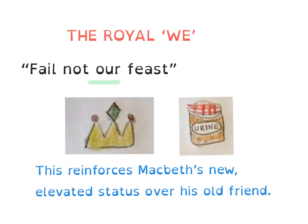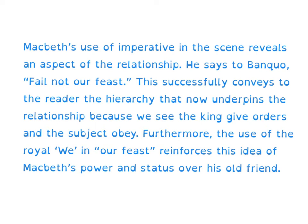Now, students who are familiar with my videos know the trick I'm trying here. I'm dipping back into the evidence — 'Fail not, our feast' — having a root around, trying to find something else that I can analyse or extrapolate in the bid to accrue the highest marks. And I've found something: 'Fail not, our feast.' You or I would say 'Fail not, my feast.' What Macbeth's doing here is using the royal we — a term of address used by monarchs and rulers, using that collective pronoun 'our' — so not 'Fail my feast' but 'Fail our feast.' And what this is doing is just emphasising or reinforcing Macbeth's new elevated status over his friend.